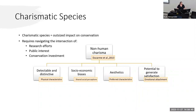I went by a few factors established by Dukarm for non-human charisma, which included detectable and distinctive socioeconomic biases — so shared social perceptions — aesthetics, and the potential to generate satisfaction.